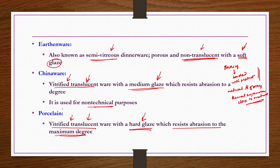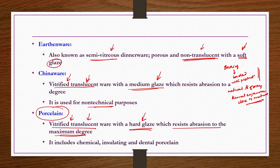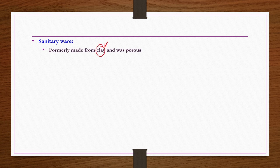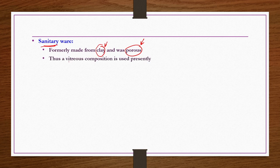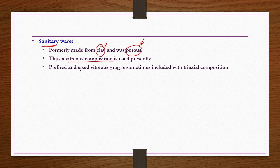Nowadays, most whitewares are porcelain type, including chemical, insulating, and dental porcelain. For sanitaryware, formally made from clay and thus porous, the porous nature is not good because seepage could enter and lessen the strength over time. So vitreous compositions are used in sanitaryware at present, forming an almost non-porous layer on the product surface. Pre-fired and sized vitreous grog is sometimes included with triaxial compositions if required.